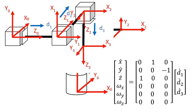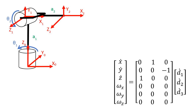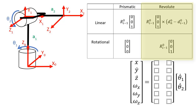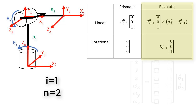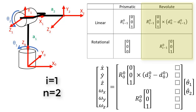Let's do another example with two revolute joints. The Jacobian matrix will still have six rows but only two columns because we have two joints. For the first column, we use the revolute part of the table. Here i equals 1 and n equals 2 because there are two joints total. So we fill in the first column as R00 times the vector 001, crossed with the displacement from frame 0 to frame 2 minus the displacement from frame 0 to frame 0, plus R00 times 001 in the bottom part.